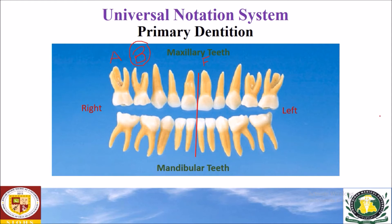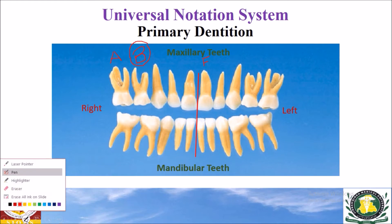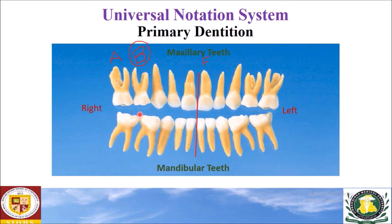Now we will do another exercise. For the right mandibular second molar — this tooth is the right mandibular second molar. This is the first mandibular molar of the right side and this is the second. For this tooth, the alphabet in the universal numbering system will be T.